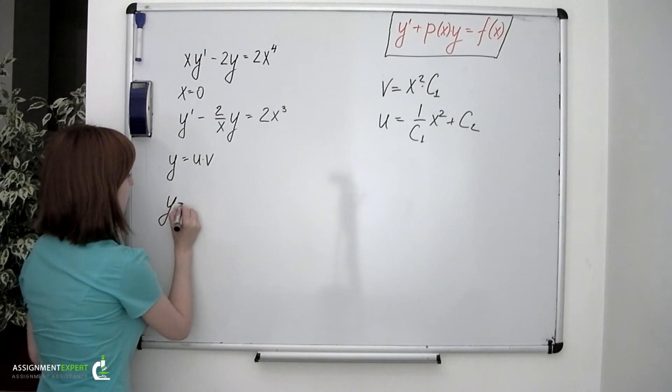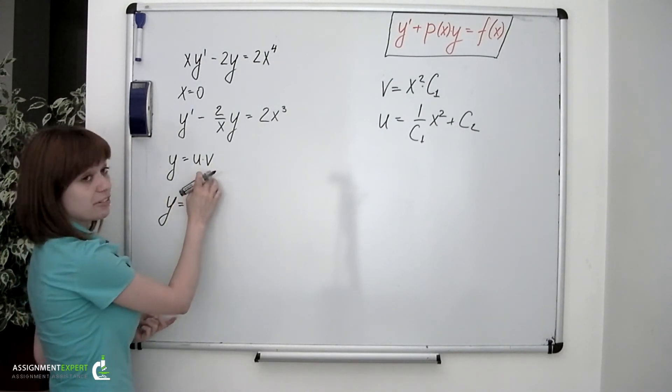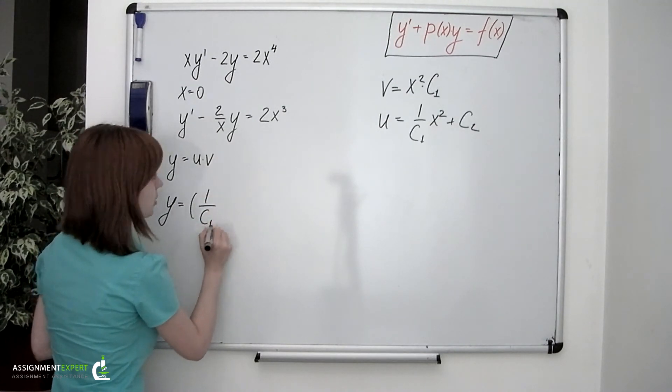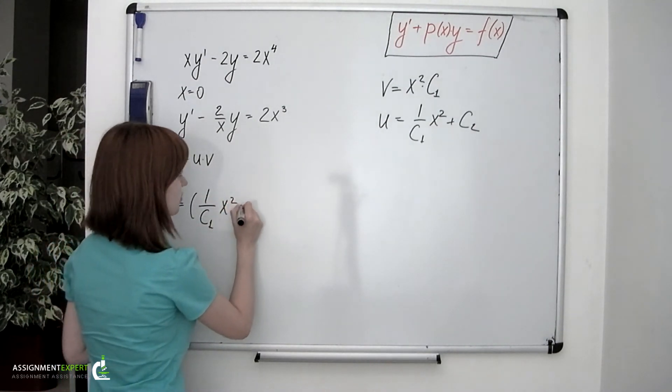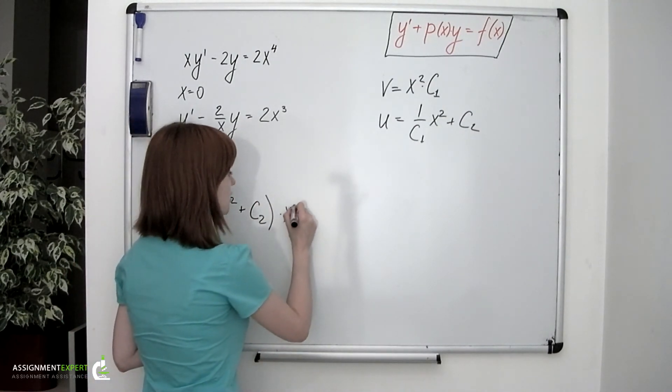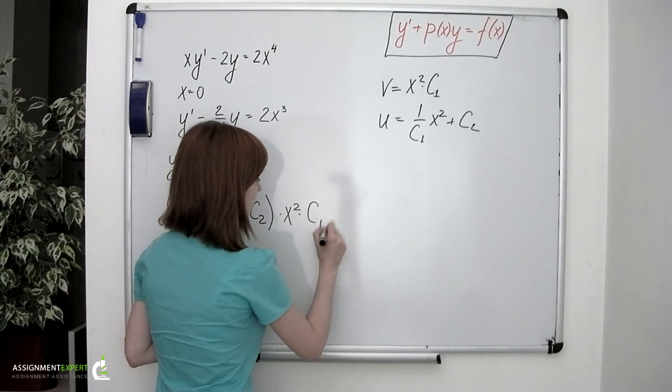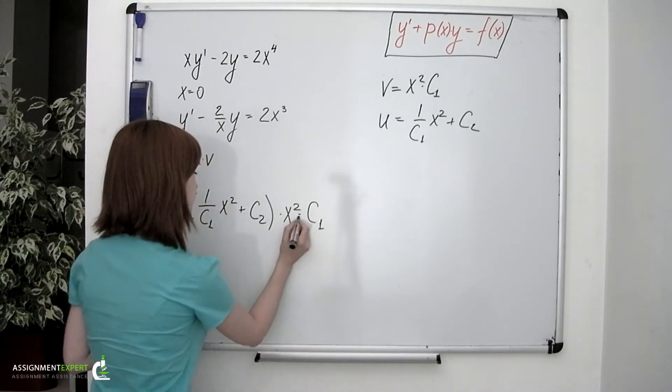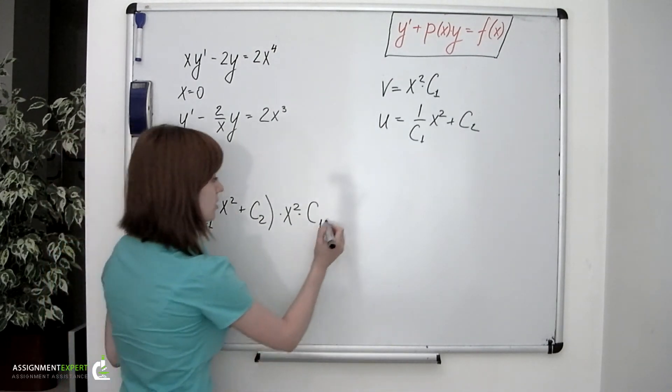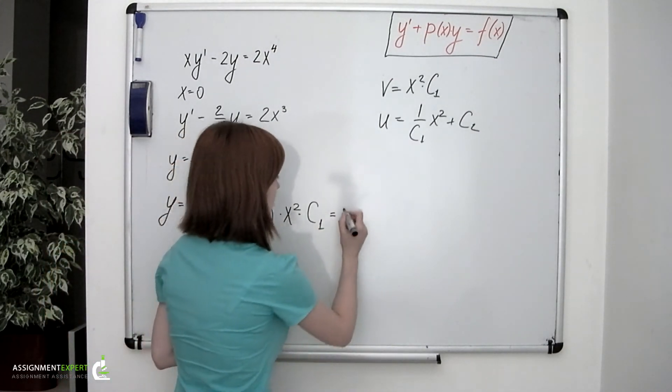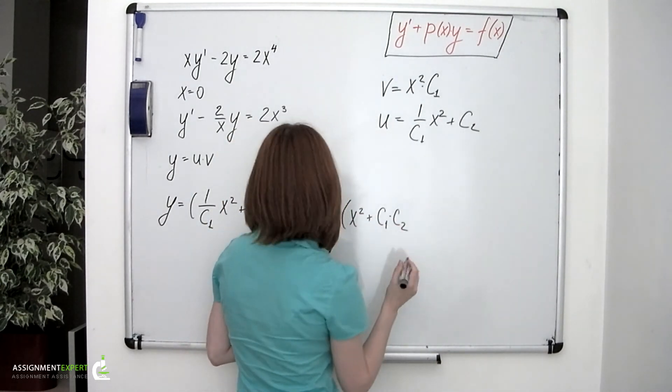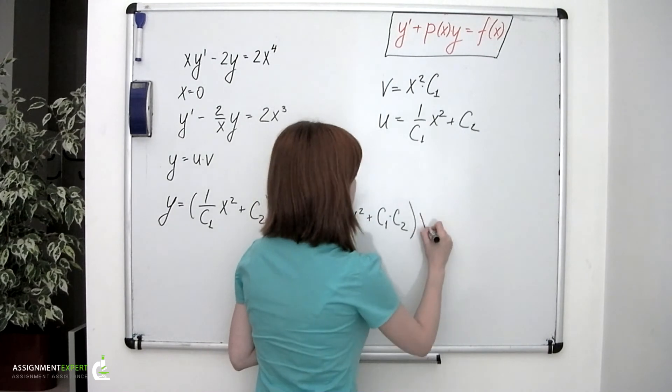So we have y equals u times v, and we've found the expressions for the u and v functions. So we go 1 over c sub 1 times x squared plus c sub 2, and then multiply it by x squared and by c sub 1. And we can multiply the expressions within the brackets by this constant c sub 1 and obtain x squared plus c sub 1 times c sub 2 times x.